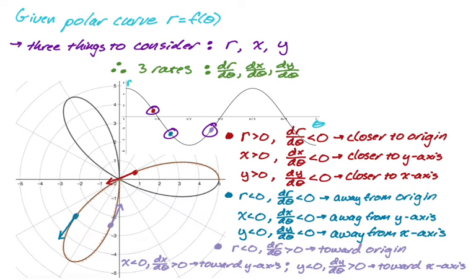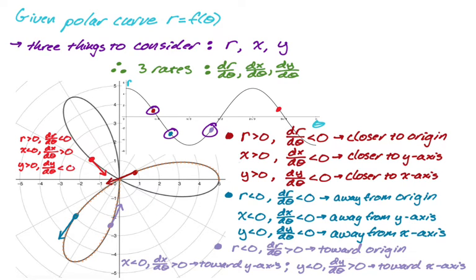For the final point in the second quadrant: R is greater than zero based on the rectangular graph, dr/dθ is less than zero. X is less than zero, dX/dθ is positive because you're pointing to the right. Y is greater than zero because you're in the second quadrant, and dY/dθ is negative because the vector is pointed down.